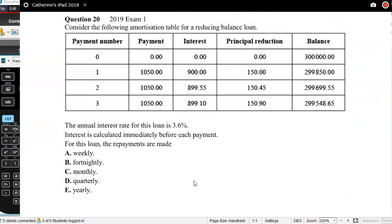So one more. This is from 2019 exam one. And we have here the whole amortization table. You can see we borrowed 300,000 and we have payments of $1,050. The annual interest rate for this loan is 3.6%. Interest is calculated immediately before each payment. For this loan, the repayments are made. So we don't know how often these payments are, but we can see that interest. We know what the annual interest rate is though.